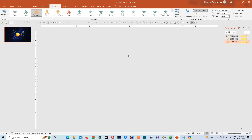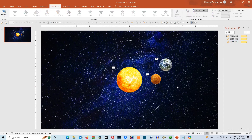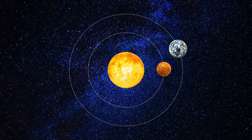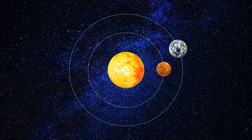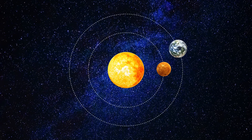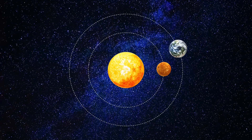Our animation is complete. If we go to Slide Show, we'll be able to see the beautiful rotation of Venus and Earth around the Sun. It's looking extremely beautiful. This is a scientific fact that the Sun, along with all other planets of the Solar System, always rotates in the counterclockwise direction. However, Venus always rotates in the clockwise direction, and this is a beautiful representation of that fact.